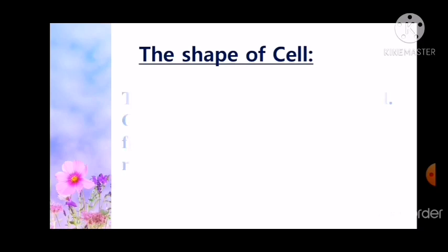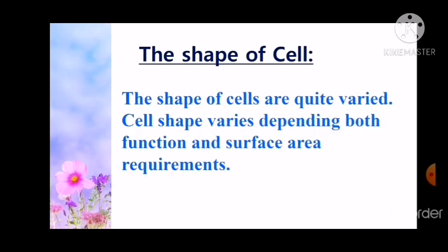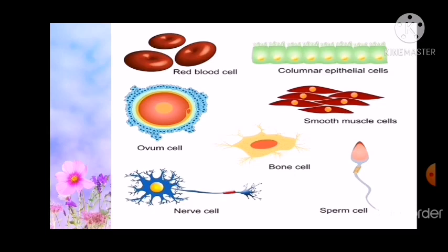The shape of cells is quite varied. Cell shape varies depending on both function and surface area requirements. In this slide, you can see various types of cells, such as red blood cell, columnar epithelial cells, ovum cell, smooth muscle cells, bone cell, nerve cell, and sperm cell.